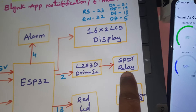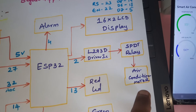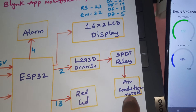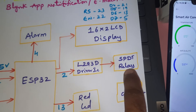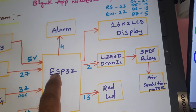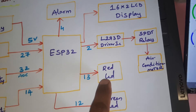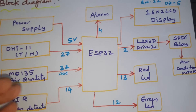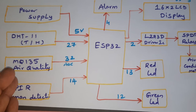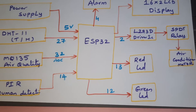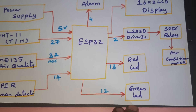We use a relay to switch the motor on and off. The motor is a 9V or 12V DC motor, so we use a relay coil. The ESP32 operates at 3.3V, which is why we use two separate circuitry boards. For the MQ135 air quality indicator: if air quality is bad, a red LED turns on; if air is fresh, a green LED turns on.